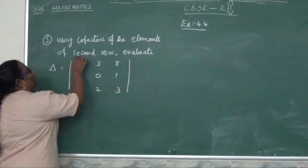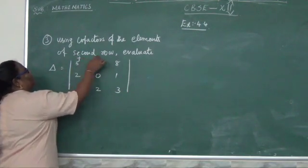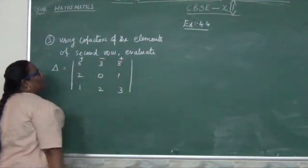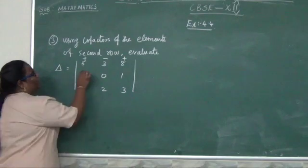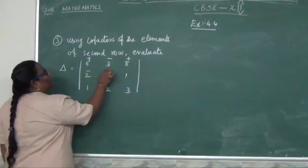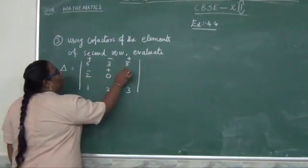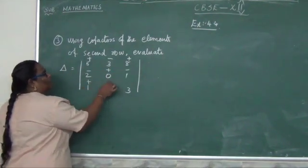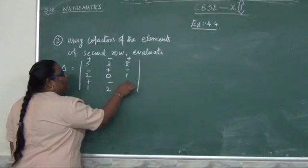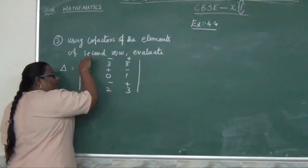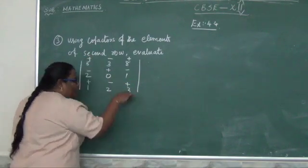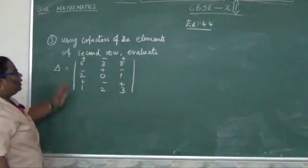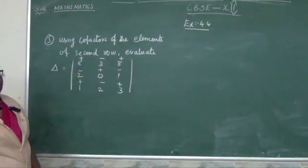First, you put a symbol: plus, minus, plus — alternate sign — minus, plus, minus, plus, minus, plus. Start with plus and end with plus also. Alternate sign.